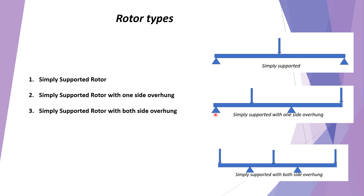The second type of rotor arrangement has one bearing at one end and another bearing in between, with an overhang on one side — it can be on the left or right. This is the simply supported rotor with one side overhung. The third type has bearings located in between with overhang on both the left and right hand sides.